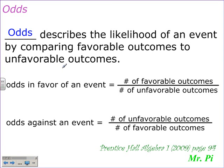Odds describe the likelihood of an event by comparing favorable outcomes to unfavorable outcomes. Odds in favor of an event is equal to the number of favorable outcomes over the number of unfavorable outcomes. The odds against an event is equal to the number of unfavorable outcomes over the number of favorable outcomes. In favor — favorable outcomes goes on top. Against — unfavorable outcomes goes in the numerator.